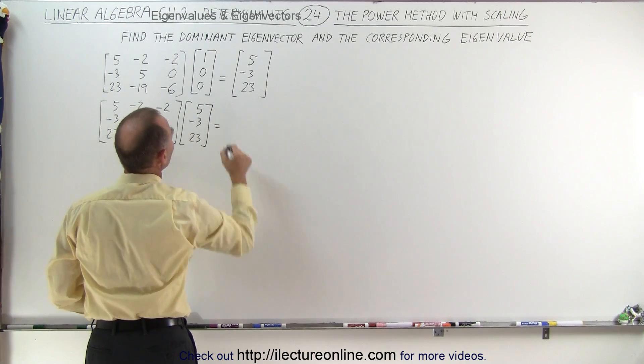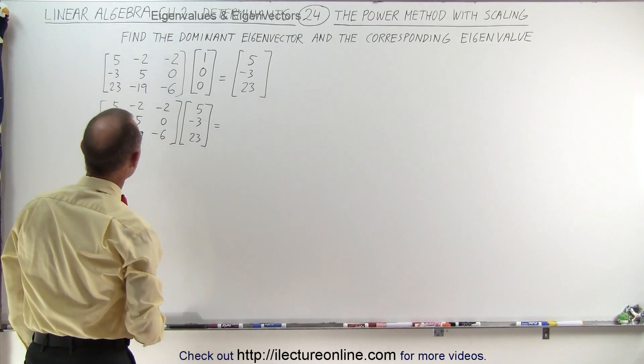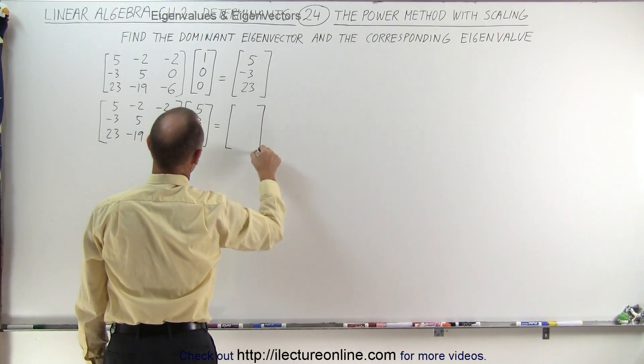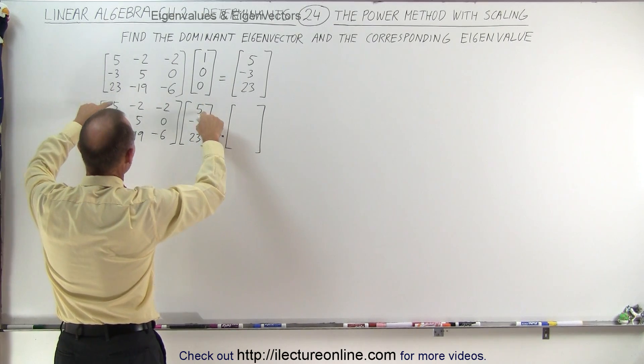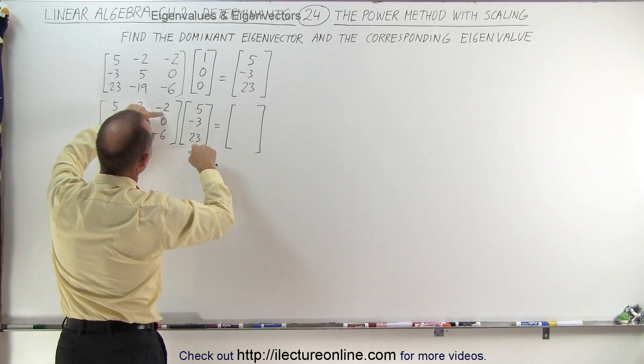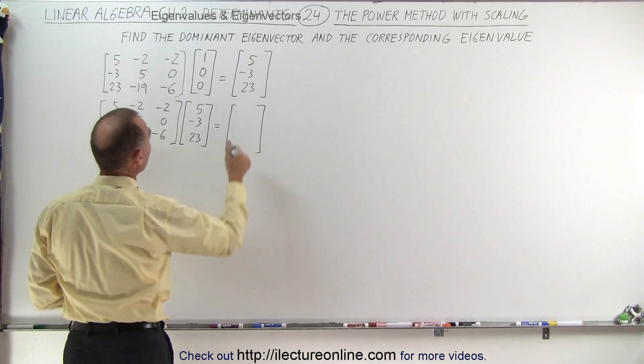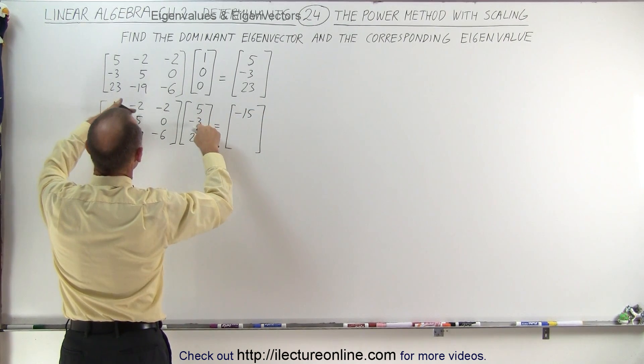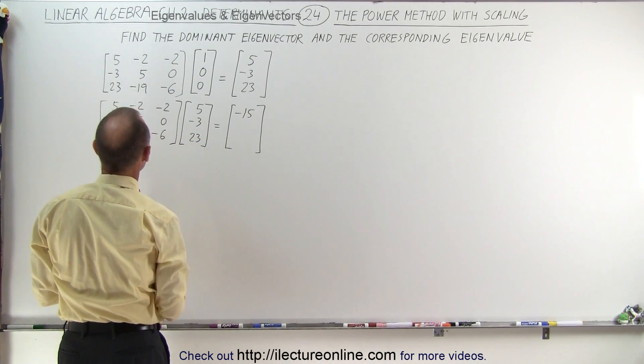Obviously no sign yet of convergence so we're not even going to use scaling here. Continuing what do we get? This will be a little bit more difficult because there's no longer any zeros there. So we get 25 plus 6 is 31 and minus 46. 31 minus 46 would be minus 15.